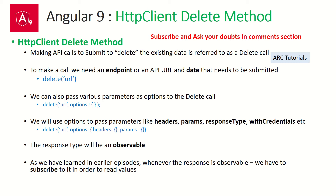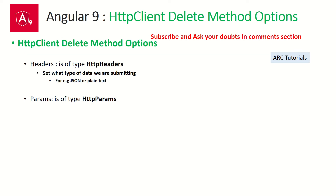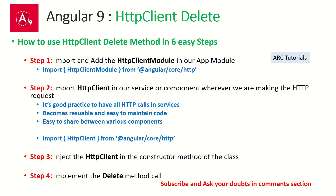The HTTP client delete method is called whenever we call an API or endpoint to delete existing data. Delete usually takes an endpoint URL, and we can also pass parameters or headers to it — the same headers and parameters we can pass to get, post, put, etc. Since it's an HTTP call, the response type will be an observable, and as we learned previously, we have to subscribe to it to read the values. We can also pass headers and params, which we'll explore in the next tutorial.